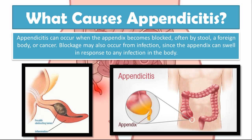So what are the causes of appendicitis? Appendicitis can occur when the appendix becomes blocked, often by stool, a foreign body, or cancer. Blockage may also occur from infection, since the appendix can swell in response to any infection in the body. Looking at the picture, you can see a fecalith — a little piece of stool. Because the appendix is a hollow tube, anything that obstructs the flow of content into and out of it causes the appendix to become inflamed or infected. A foreign body could be any food particles or anything ingested. Cancer could be a tumor developing at a portion of the appendix, causing a blockage and leading to appendicitis.